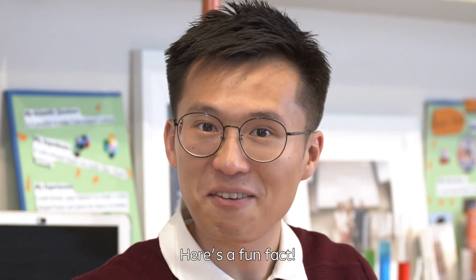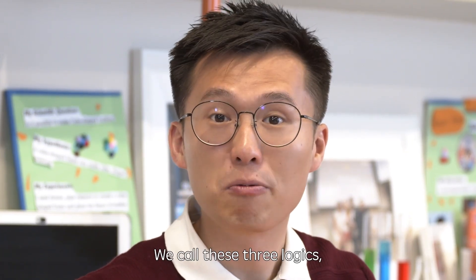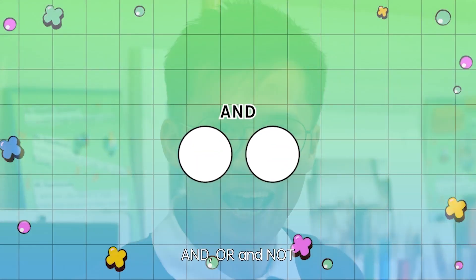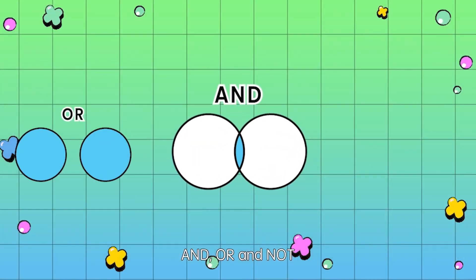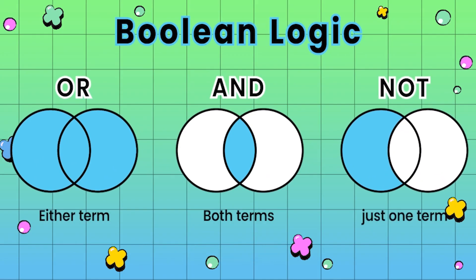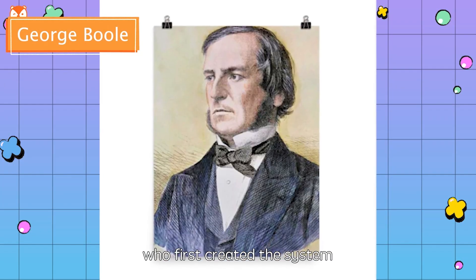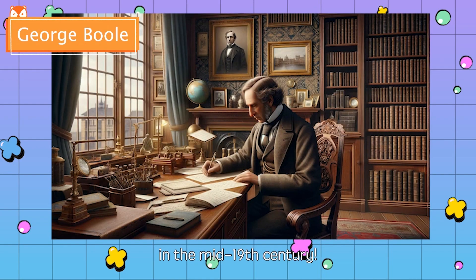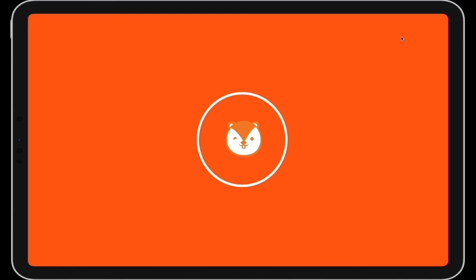Here is a fun fact. We call these three logics AND, OR, and NOT boolean logic. The word boolean is named after Josh Bolt, who first created the system in the mid-19th century.